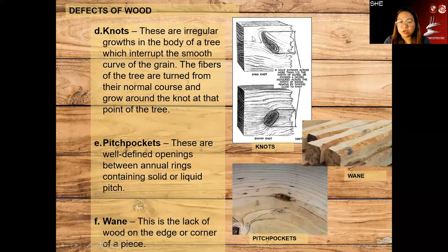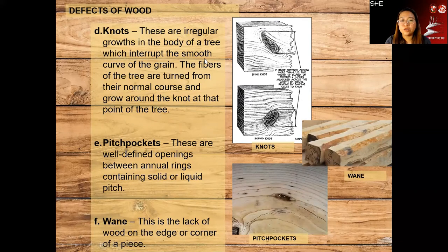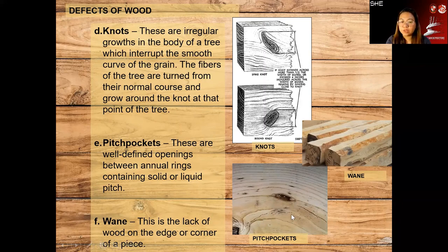We have knots — they look like an eye. These are irregular growths in the body of a tree that interrupt the smooth curve of the grain. The grain follows around them. And then we have pitch pockets, which are well-defined openings between the annual rings containing solid or liquid pitch.